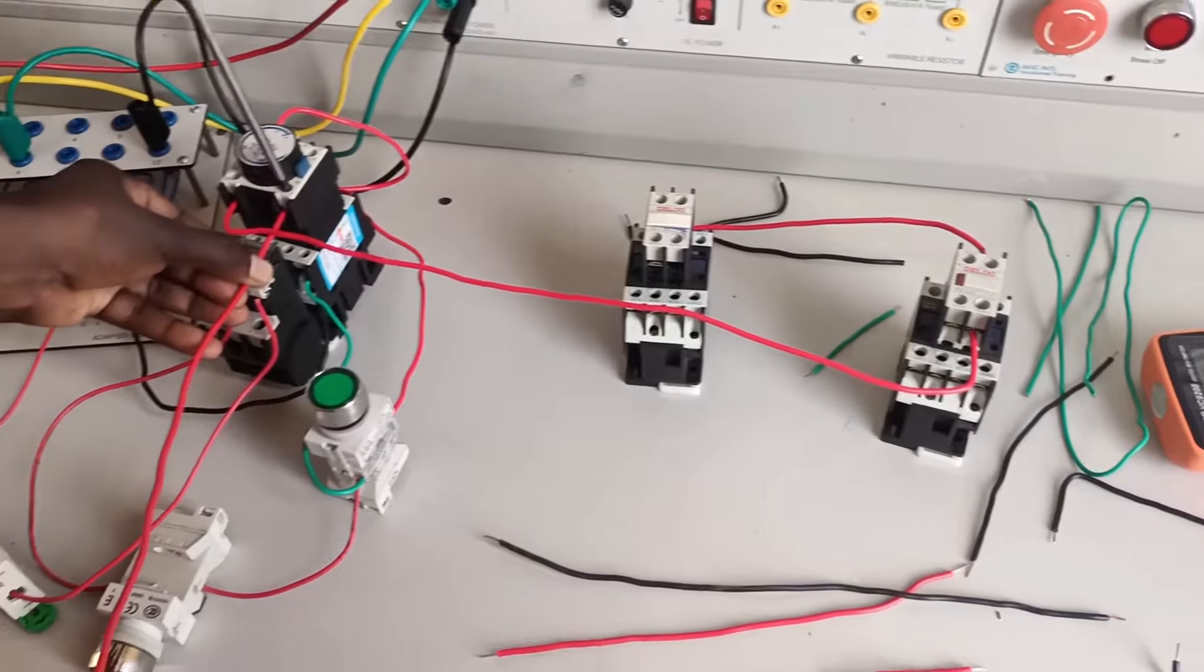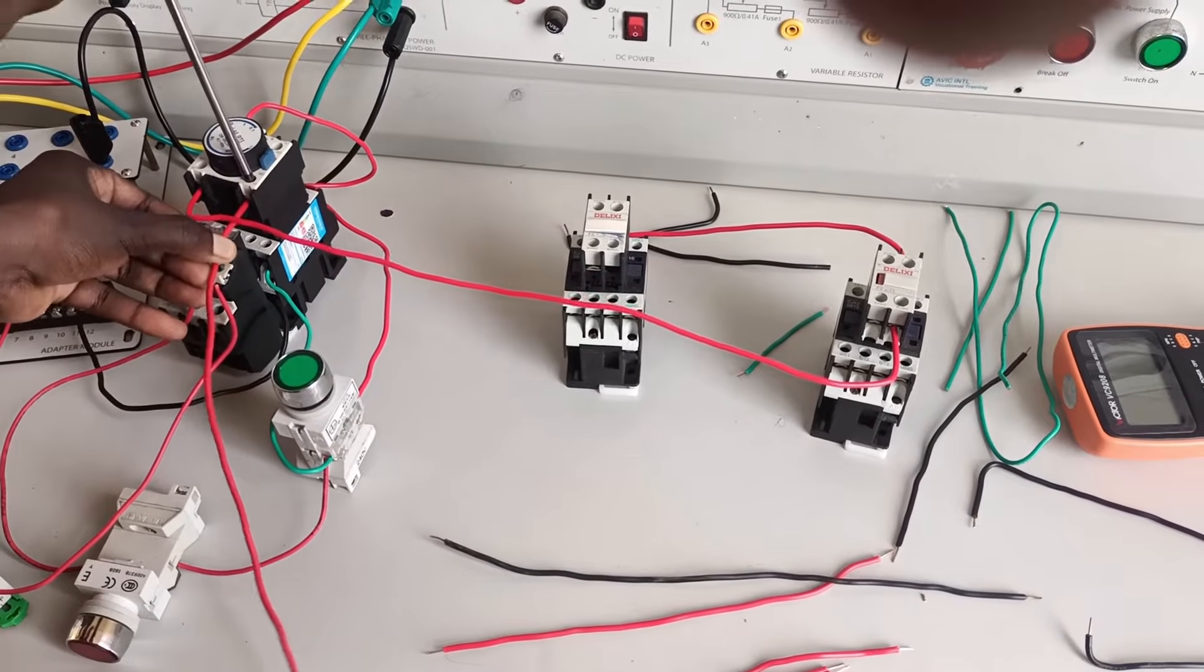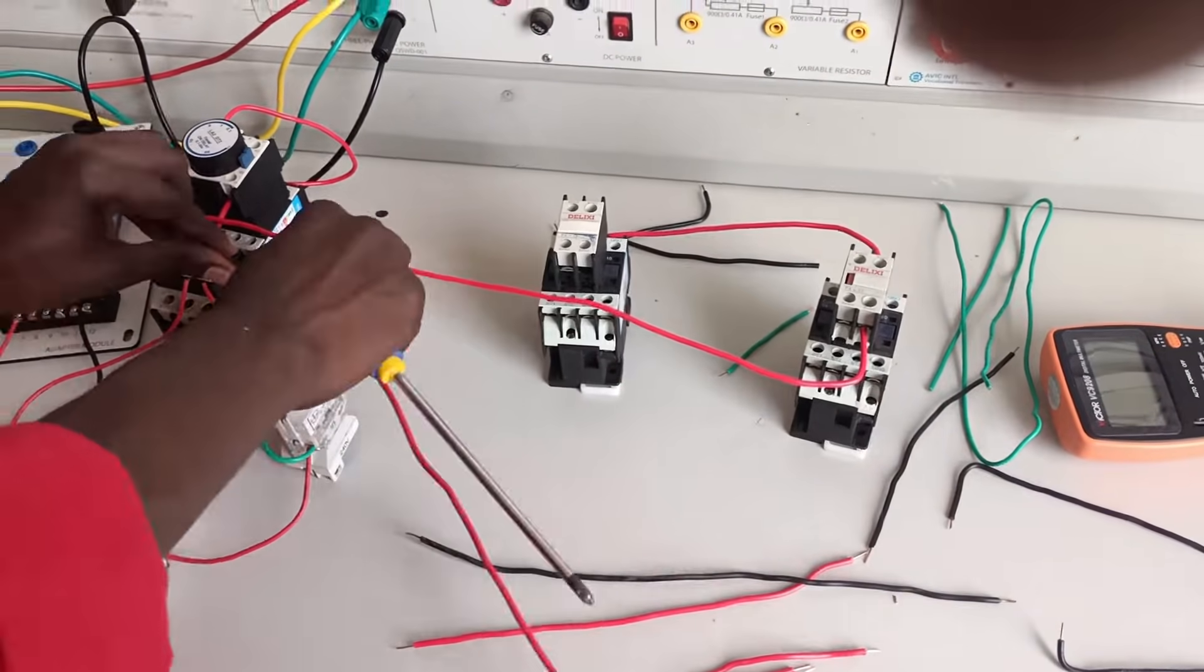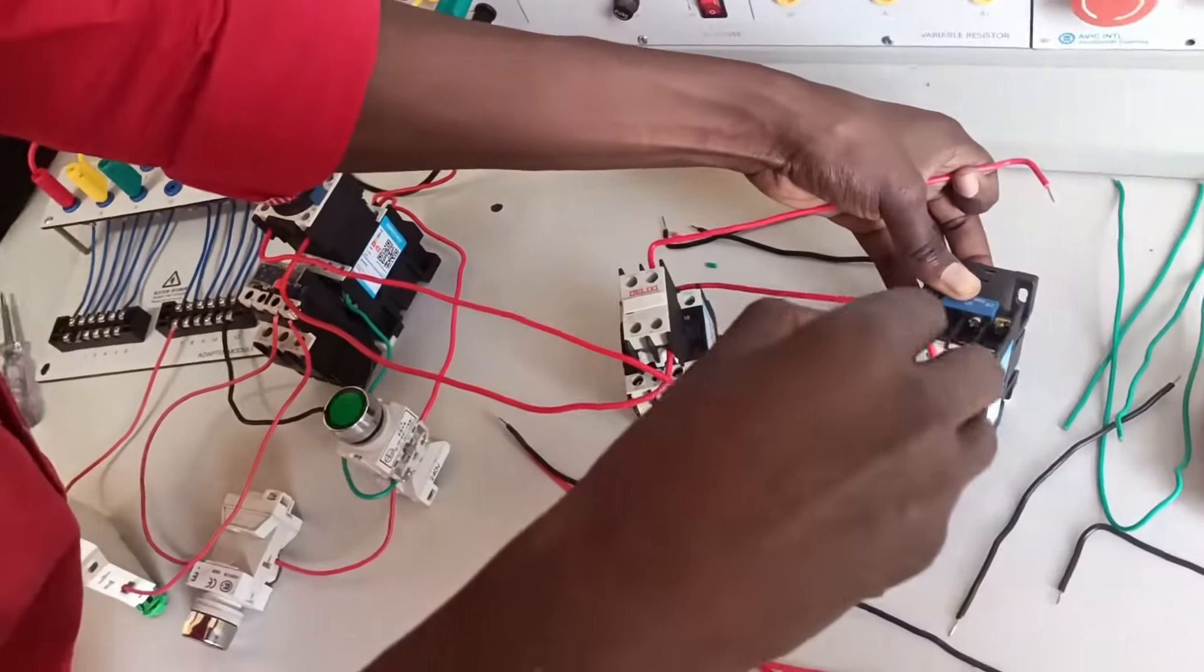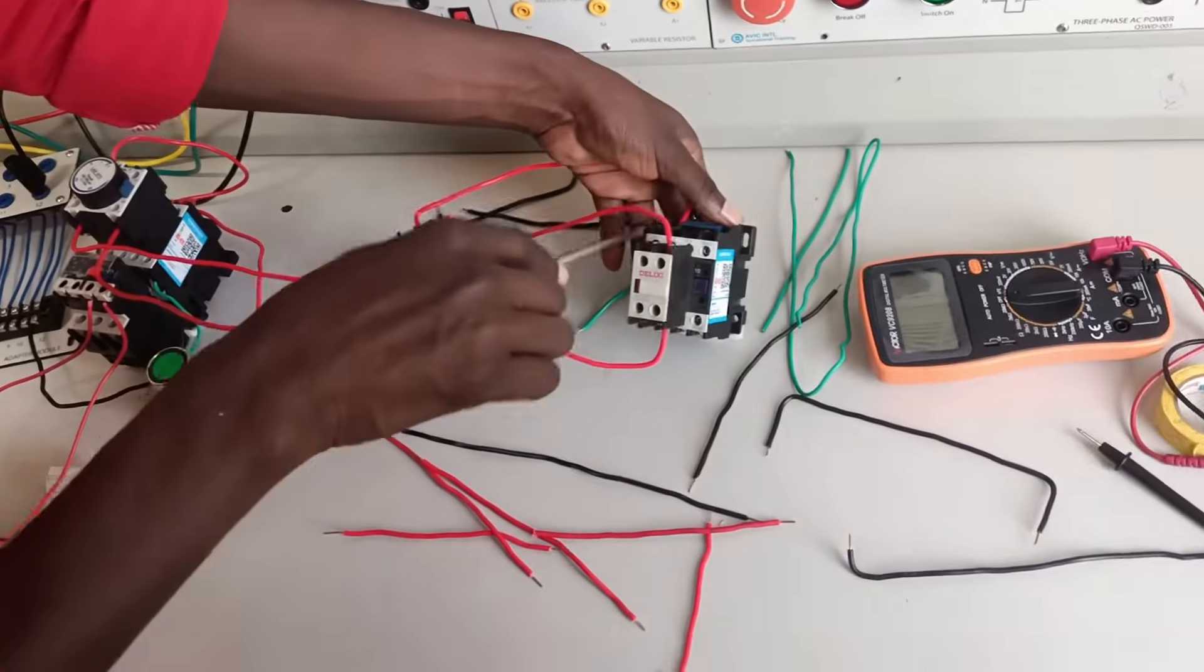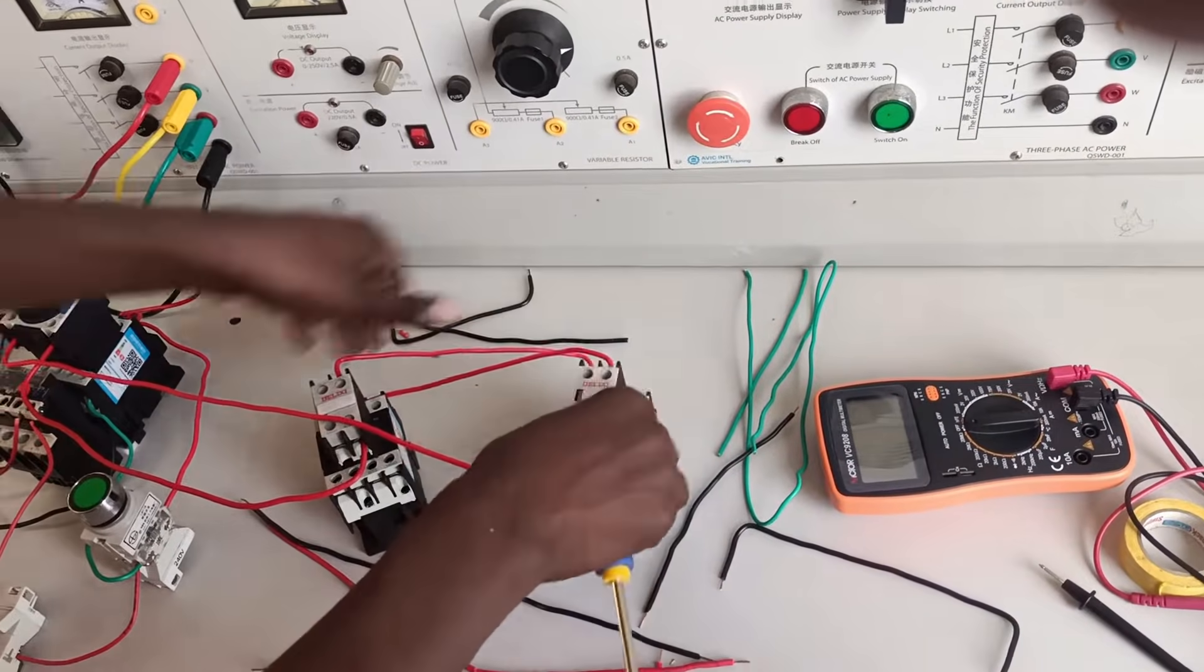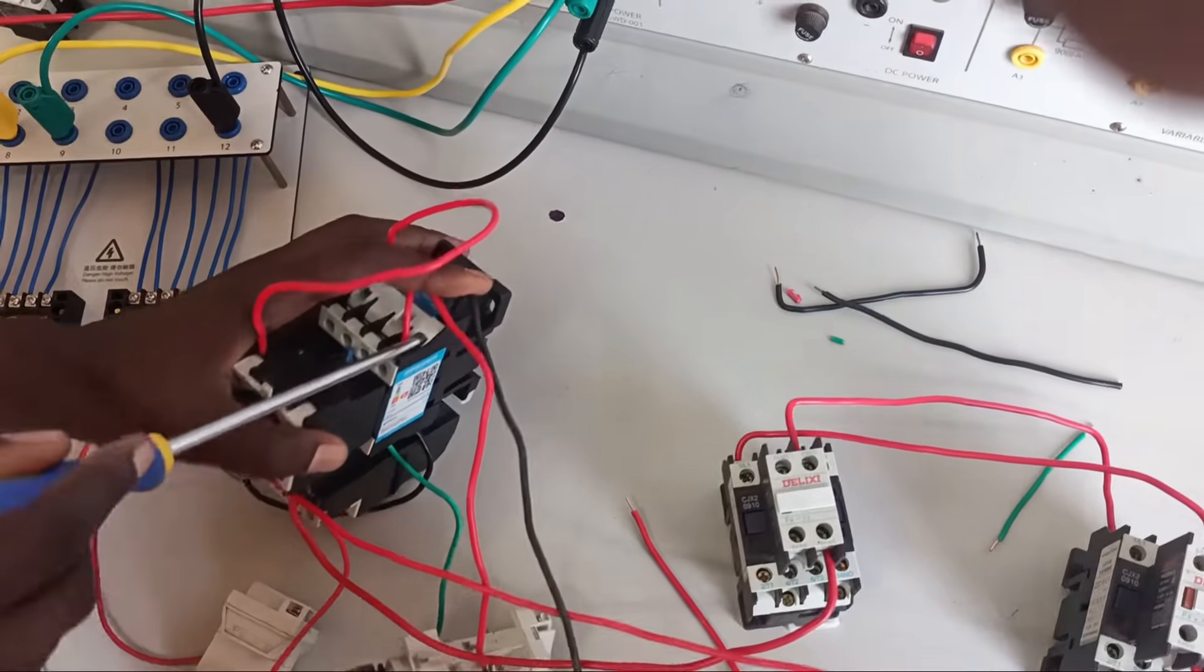And then the other one, from the normally open contact of the timer will go to the star A1, but through delta contactor, that is contactor 2. That's why you're seeing the normally closed terminals of the delta contactor, going to the A1 energizing coil of contactor 3. That one we call interlocking connection.